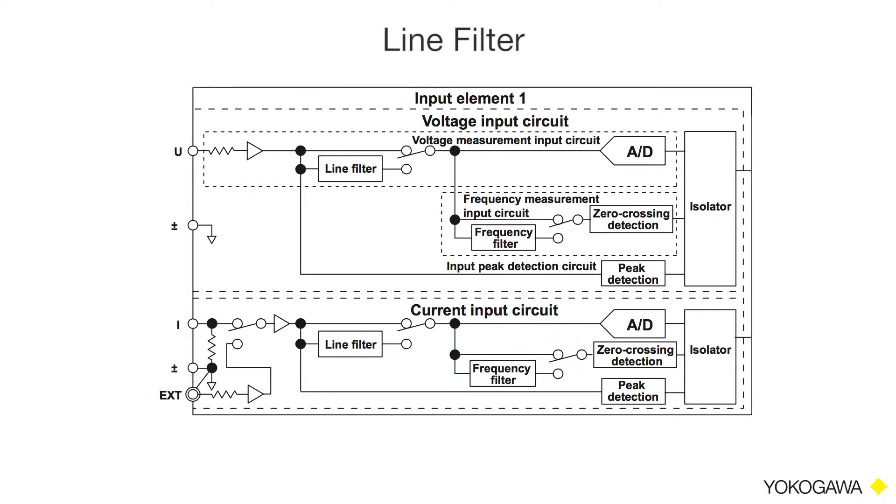The line filter is a low-pass filter inserted into the voltage and current measurement input circuits. Therefore, it directly affects the voltage, current, and power measurements.